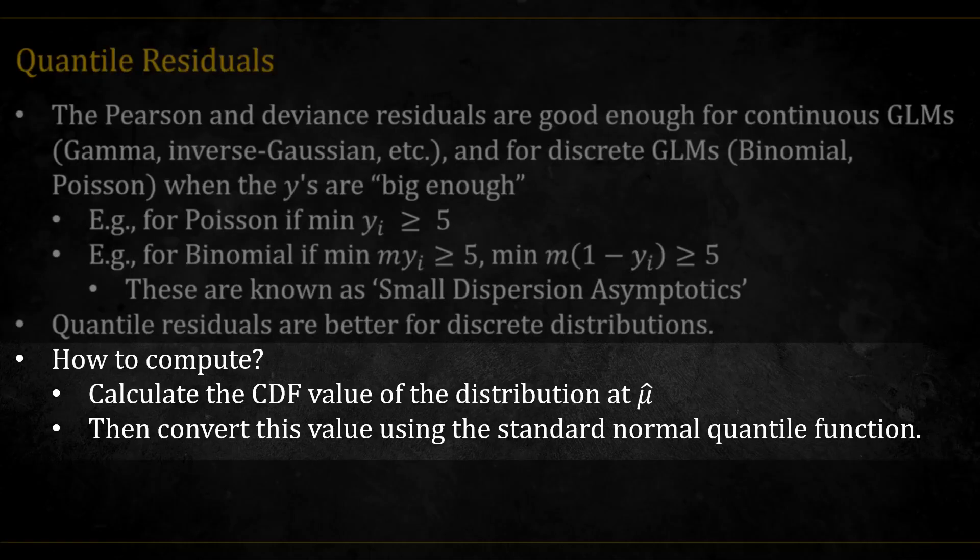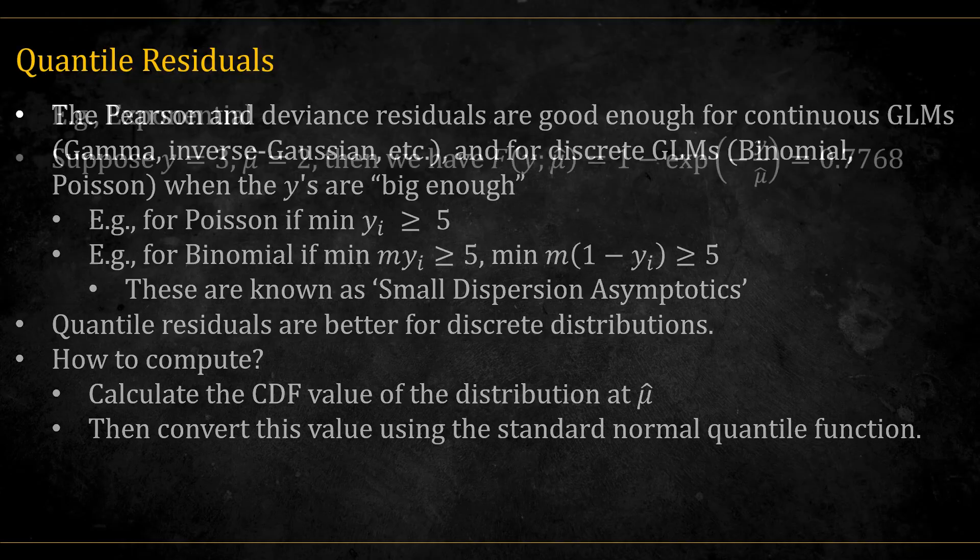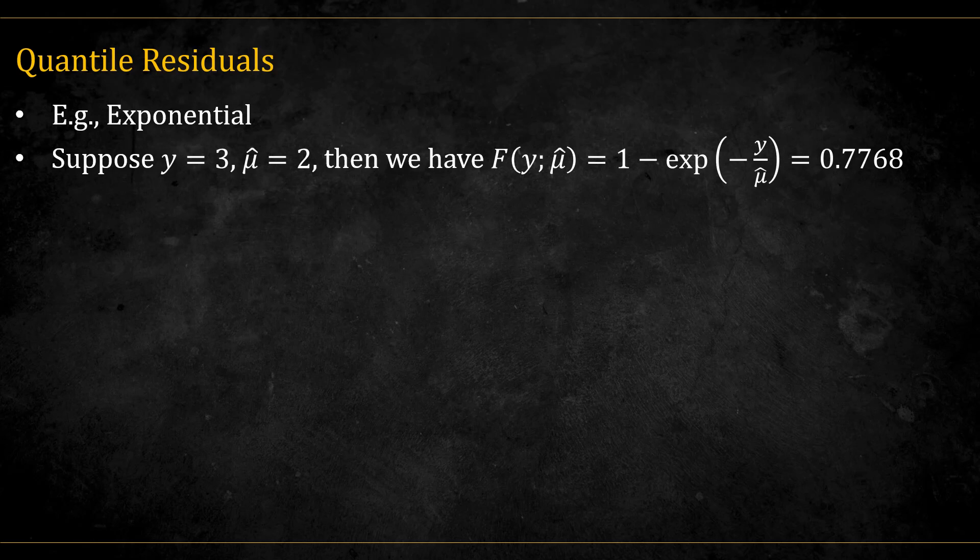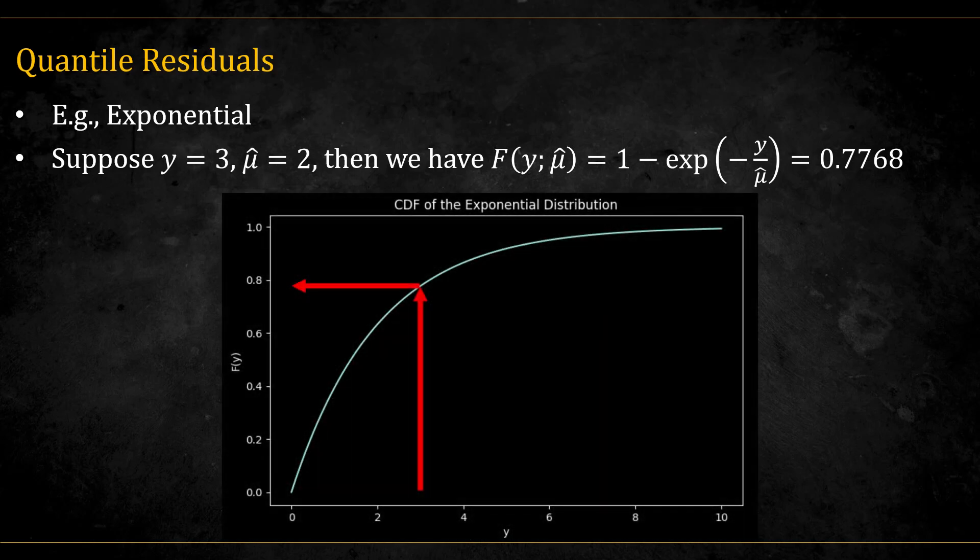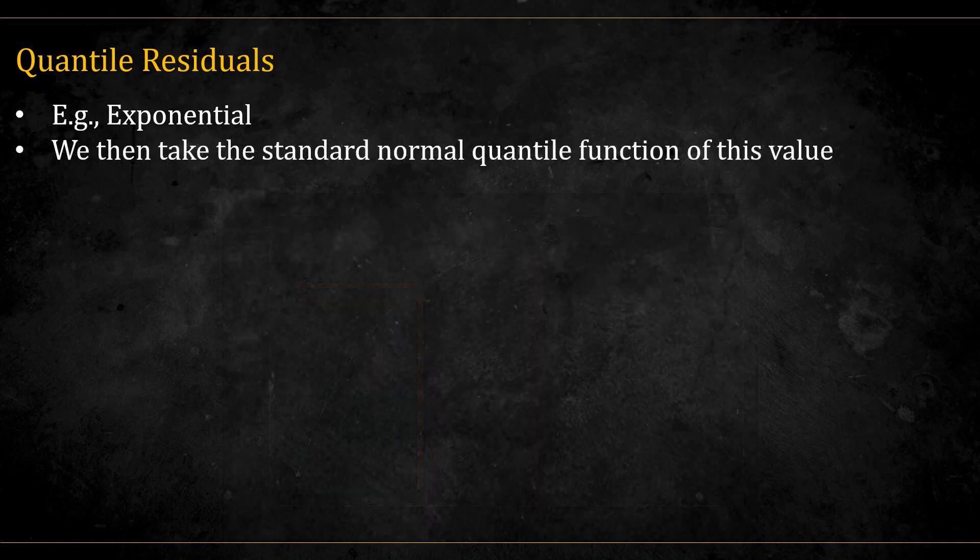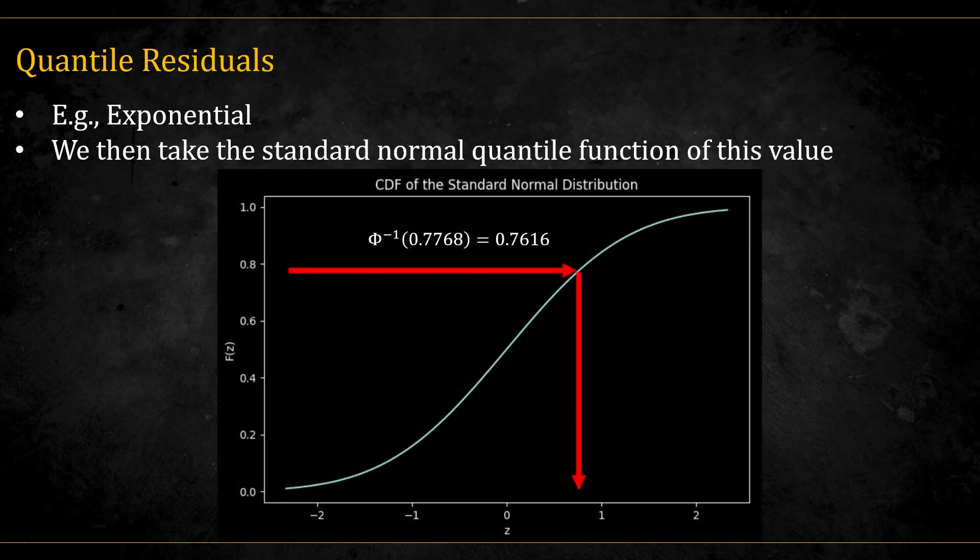How do we compute them? Well, we first calculate the CDF values of the y's according to their estimated mu's. Then we invert these CDF values using the standard normal quantile function. Here is an example for a continuous distribution, like the exponential, which is a special case of the gamma. Suppose y is equal to 3, and its predicted mu after fitting the model is equal to 2. The CDF is thus equal to this. We then use the standard normal quantile function and invert this value to get the residual. In this case, it is equal to this.